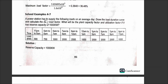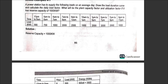A power station has to supply the following loads on an average day. Draw the load duration curve and calculate the daily load factor. What will be the plant capacity factor and utilization factor if it has a reserve capacity of 1000 kilowatts?